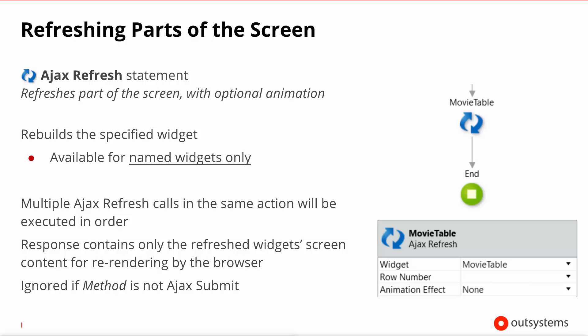You can optionally not only select which is the target widget that you want to refresh, but also optionally select an animation so that the user has a visual cue that something has changed. It's important to stress that to point the Ajax refresh to a widget, this widget needs to have a name so it appears in the drop-down. All the big widgets like the table records or list records have names by default, but for minor widgets you might need to go into the screen and explicitly name the widget so you can then call an Ajax refresh on it.